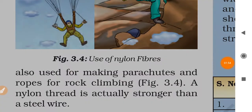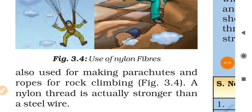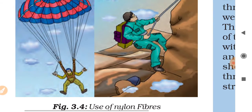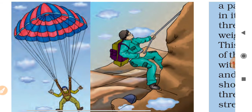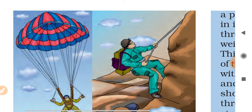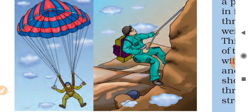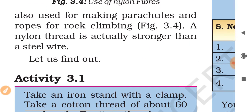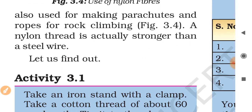Nylon is also used for making parachutes and ropes for rock climbing. A nylon thread is actually stronger than a steel wire. You can see in the figure the use of nylon fibers — in parachutes and in making ropes for rock climbing. It is stronger than a steel wire.